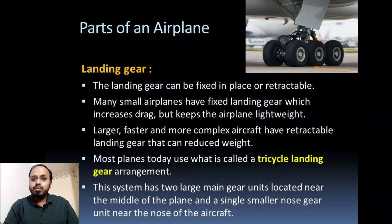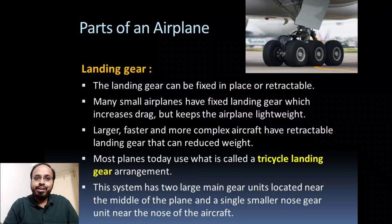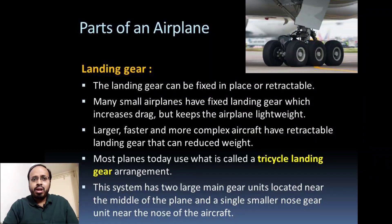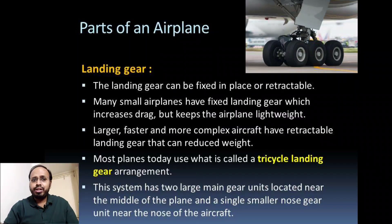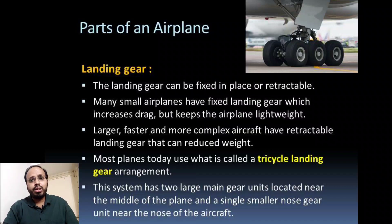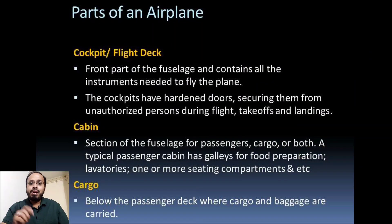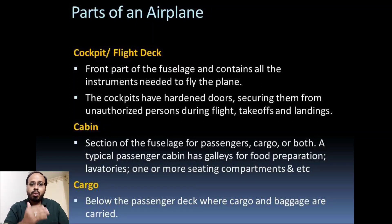Most planes today use what is called tricycle landing gear — a very famous landing gear arrangement. This system has two main gear units located near the middle of the wing and a single smaller nose gear unit near the nose of the aircraft.